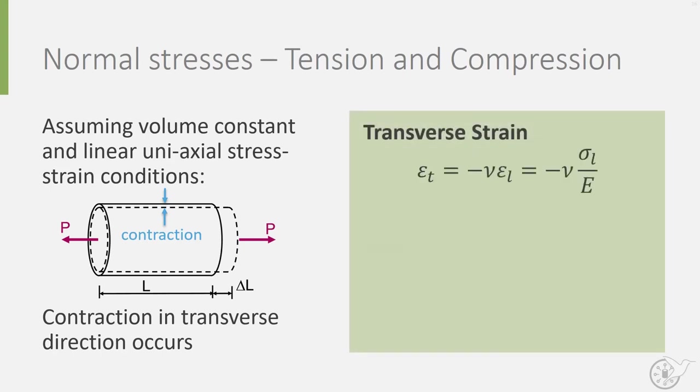It is equal to minus nu, to indicate opposite direction of deformation, times the normal strain epsilon l. Or, if further written out, to minus nu times the normal stress over the modulus of elasticity E. The small Greek letter nu is known as Poisson's ratio, and like the modulus of elasticity, the Poisson's ratio is a material property.